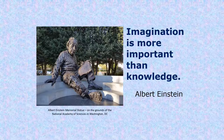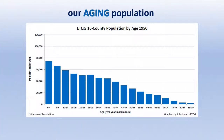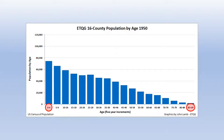As we consider the aging transformation of our population over more than 120 years, we can begin by tracking changes in the age distribution of the population, from the past to the present, and projected into the future. The distribution shows population count by five-year age groups, from zero to four years old on the left, to 85 years old and older on the right.